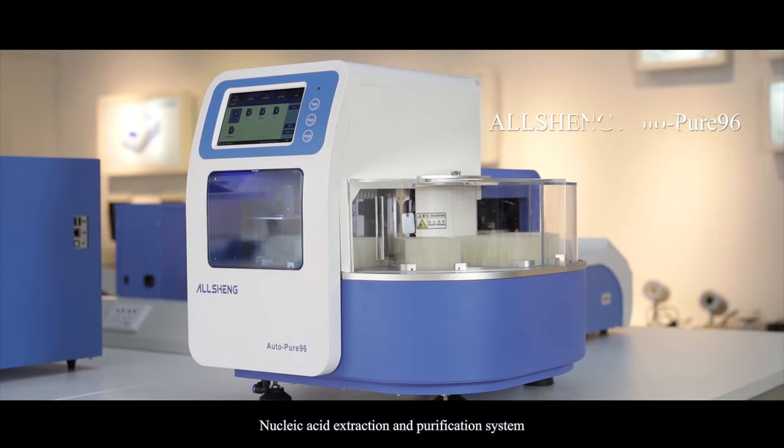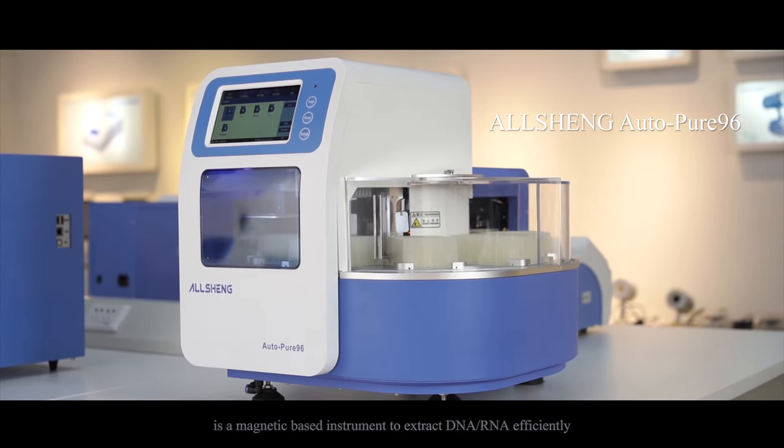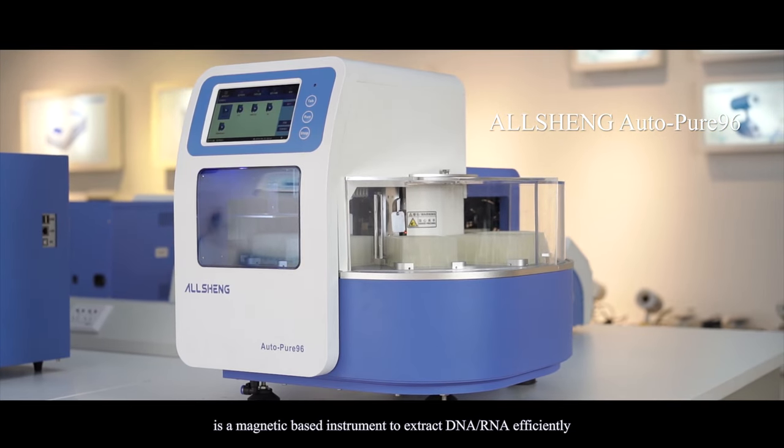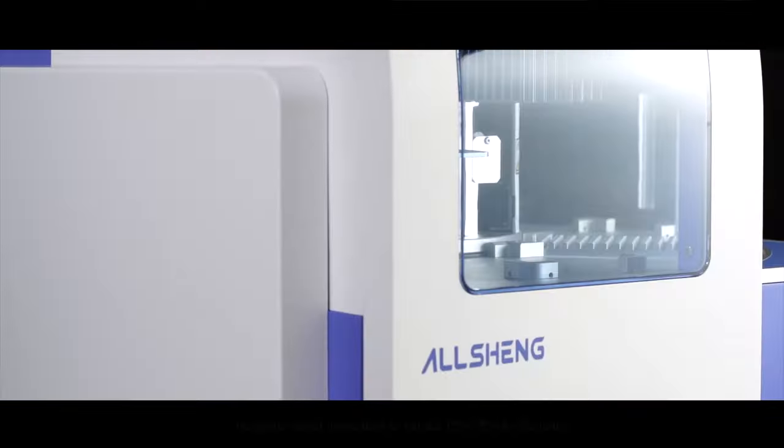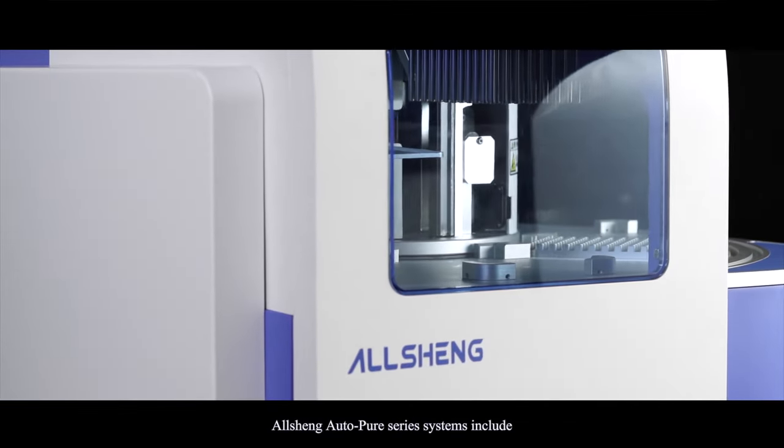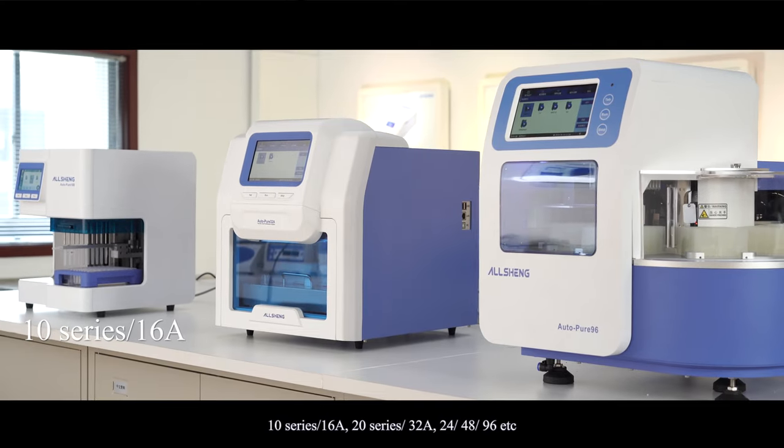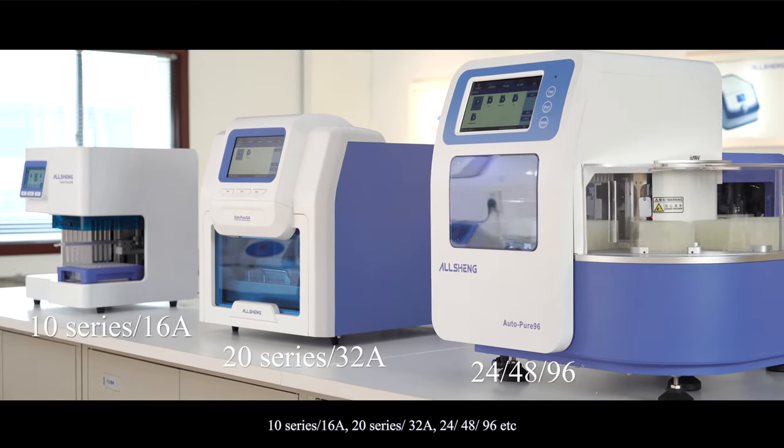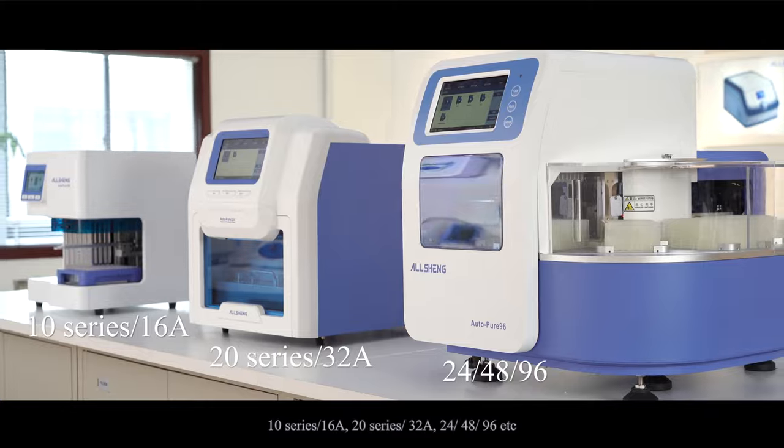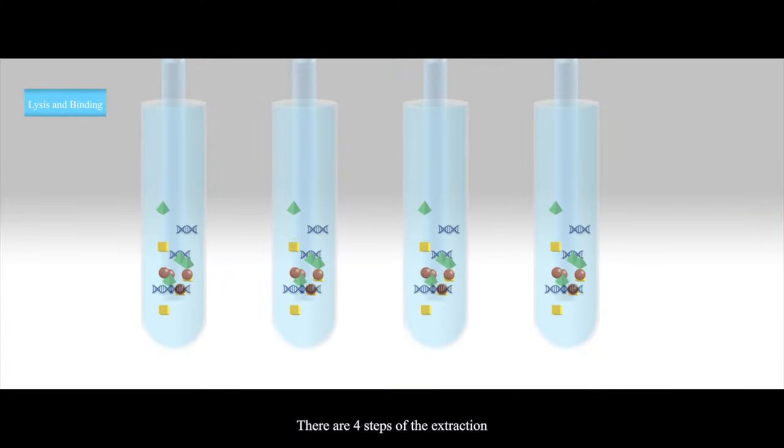Nucleic acid extraction and purification system is a magnetic-based instrument to extract DNA and RNA efficiently. Ocean Auto Pure series systems include 10 series, 16A, 20 series, 32A, 24, 48, 96, etc. There are four steps of the extraction.